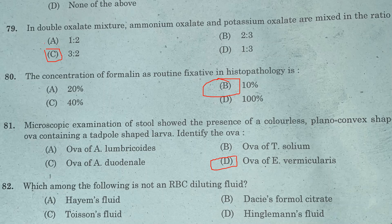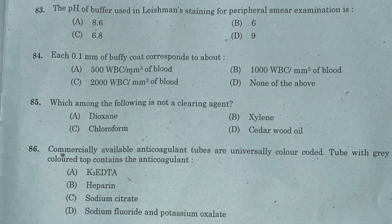Question 82: Which among the following is not an RBC diluting fluid? Option A: Hayem's fluid. Option B: formal citrate. Option C: Toison's fluid. Option D: Hingleman's fluid. Answer is Option D, Hingleman's fluid.